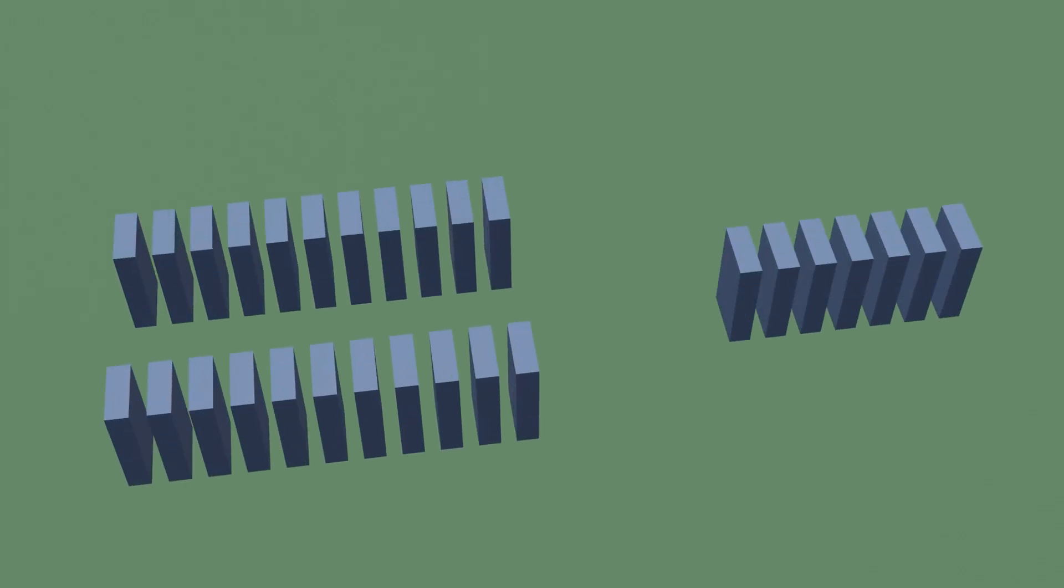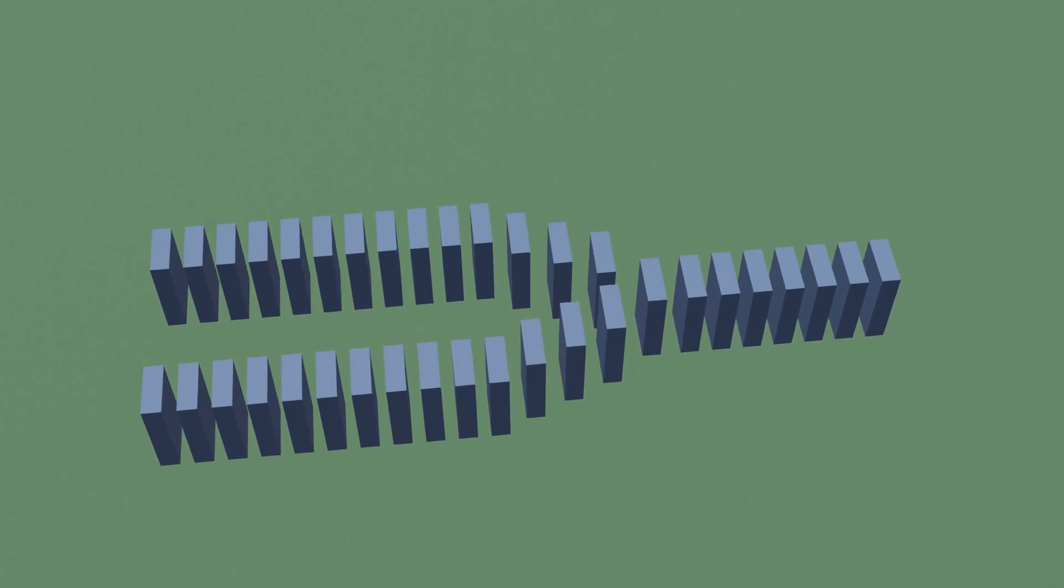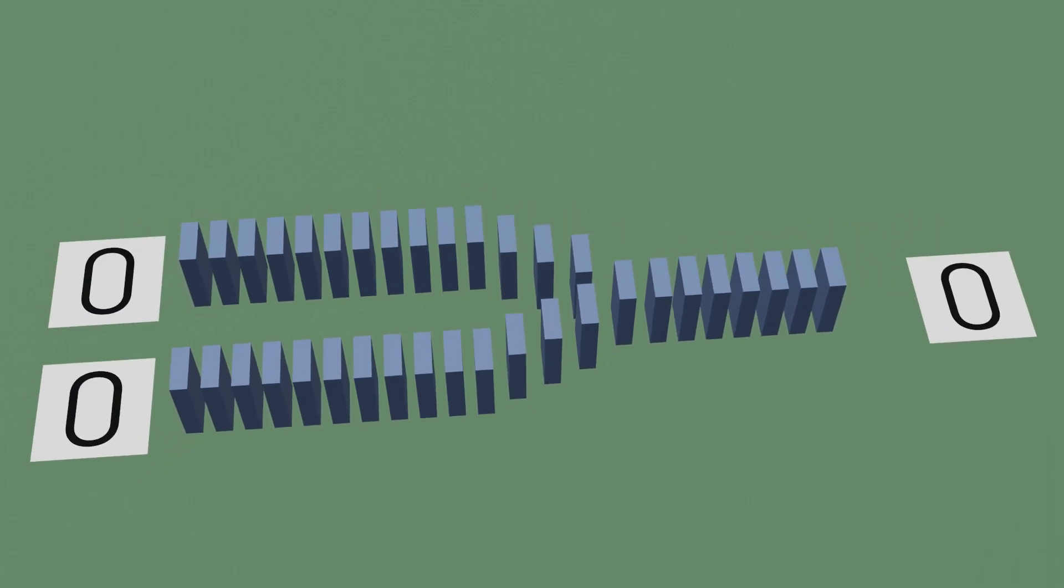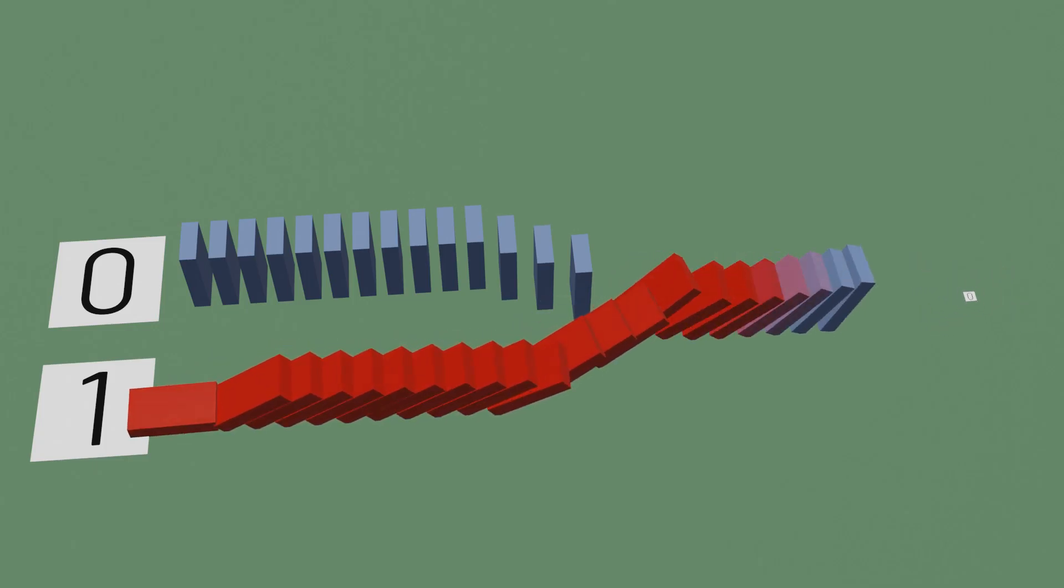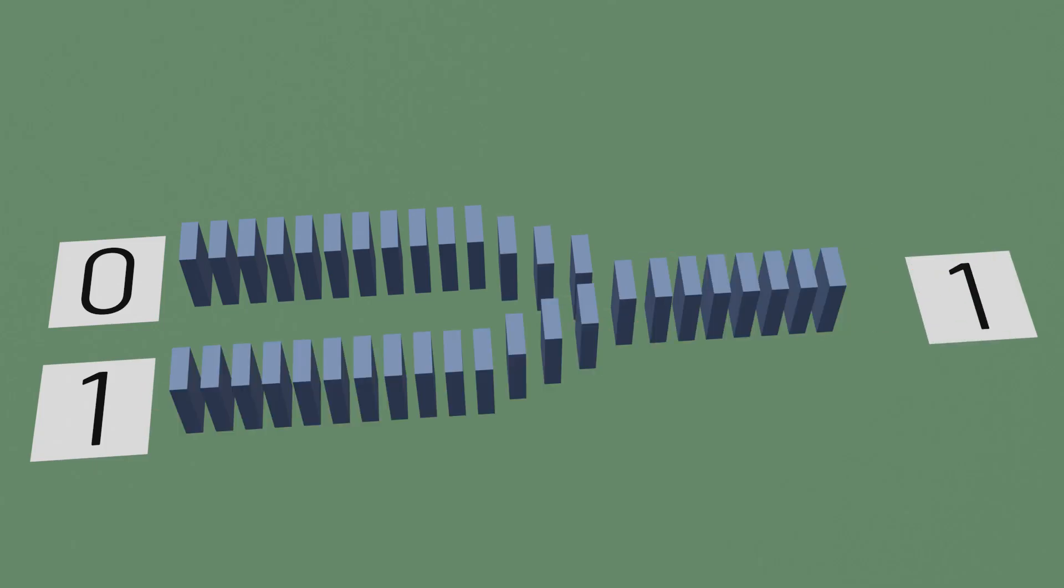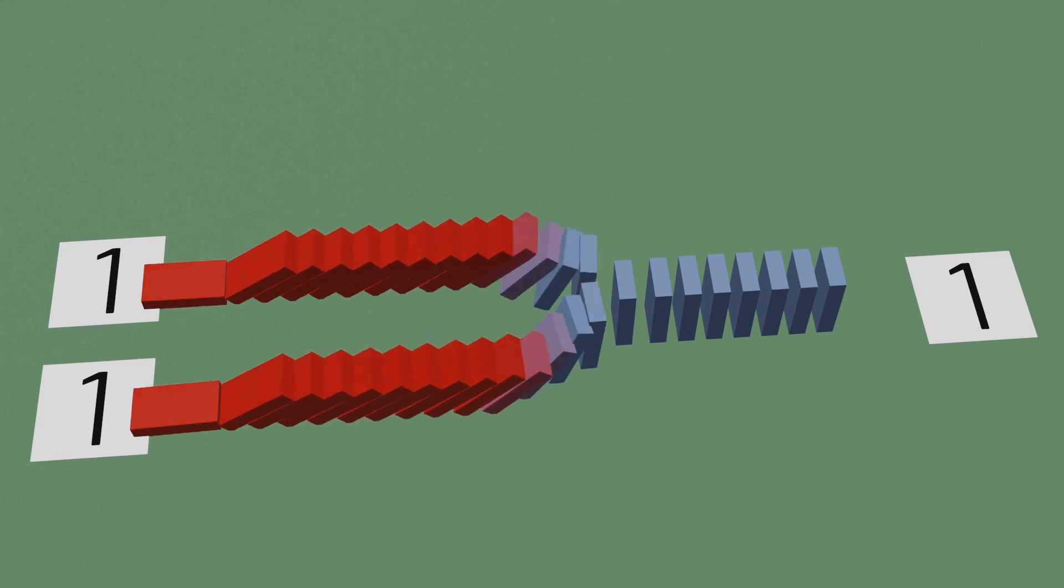In domino terms, this means we have two domino inputs, and we want the output to fall if either input is pushed. This is straightforward enough to create if we connect both inputs to the same output. If no input is pushed, the output is 0, and if either one of the inputs is pushed, the output is 1. And if both inputs are pushed, the output is still a 1.